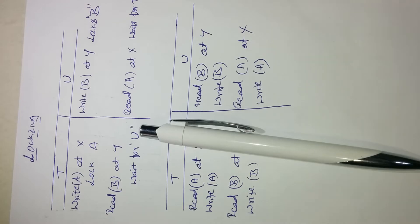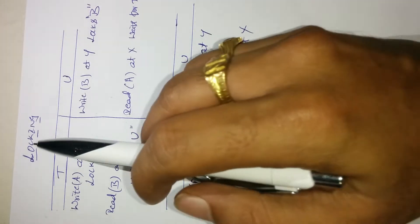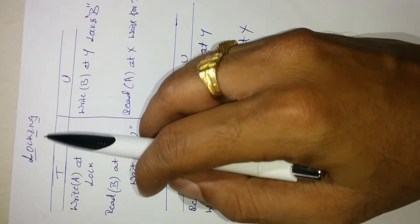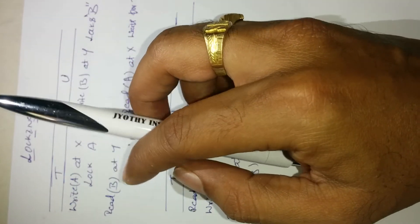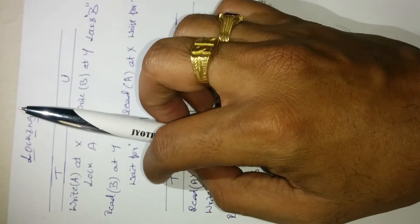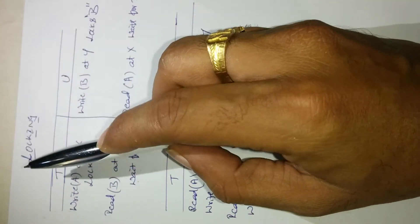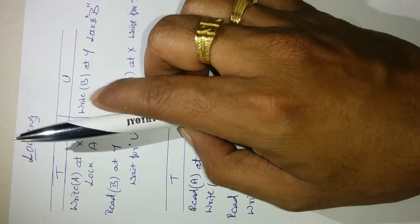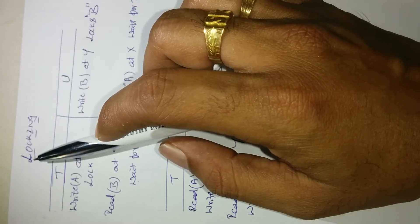Today I am going to discuss a new topic called locking. Before starting locking, let's discuss a brief introduction about concurrency control — specifically concurrency control in a distributed system and in a distributed transaction.